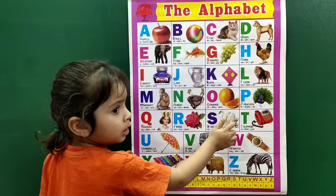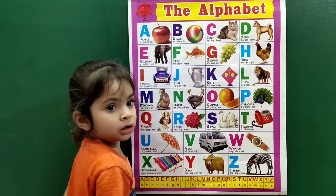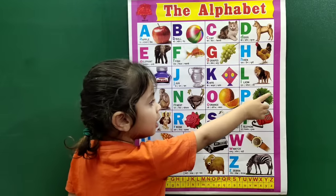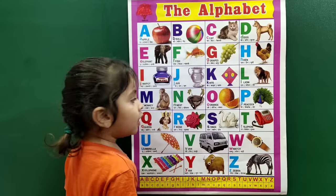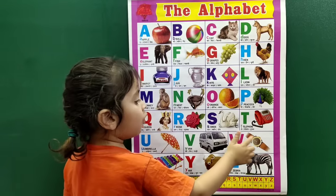S for swan, T for telephone, U for umbrella, V for van, W for boy.